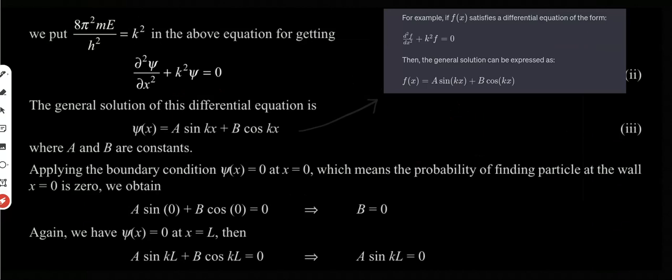If we define a function f(x), it will satisfy the differential equation d²f/dx² plus k² f is equal to 0. The general solution can be represented as A sin(kx) plus B cos(kx), where A and B are constants. Now we introduce these constants and apply the boundary condition: the wave function psi(x) becomes 0 at x equal to 0.